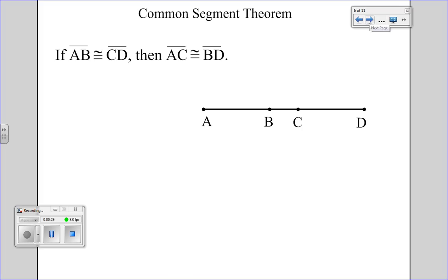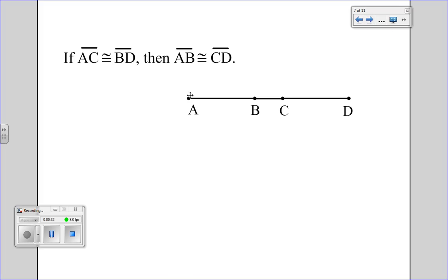This is also true for the converse. If AC, the segment and the new piece, is congruent to BD, then AB is also congruent to CD.